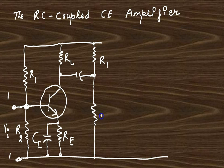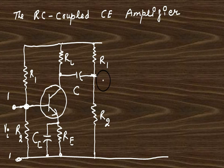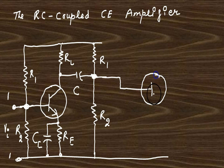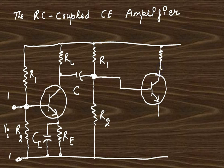There are four resistors for Q2 — R1, R2. This is a blocking capacitor CE. It blocks the DC biasing but allows the AC signal to pass. The AC signal is applied to the base of Q2 through the capacitor. That is why it is called RC Coupling.